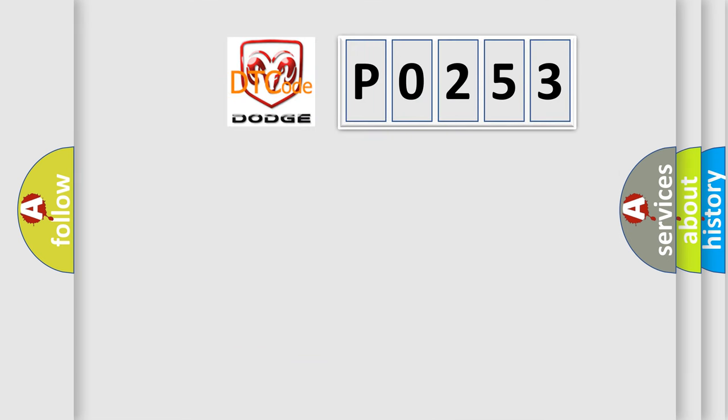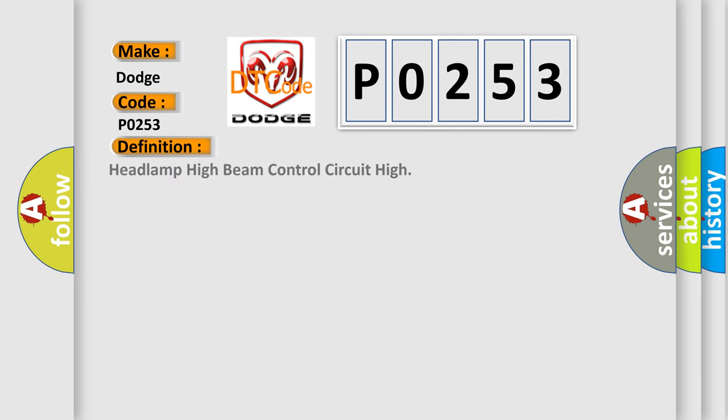So, what does the diagnostic trouble code P0253 mean for Dodge car manufacturers? The basic definition is headlamp high beam control circuit high. Here is a short description of this DTC code.